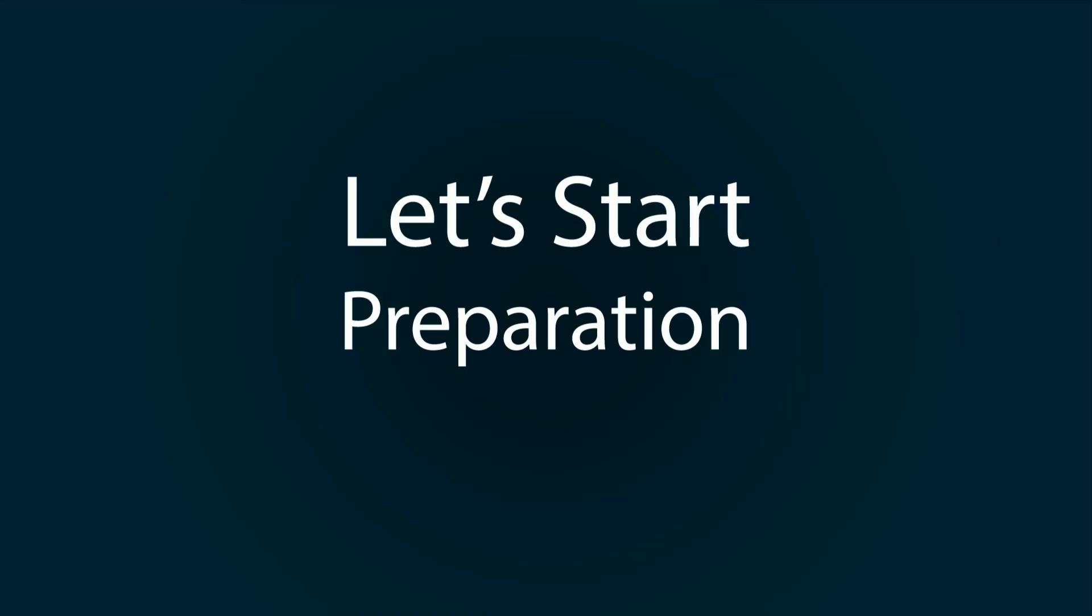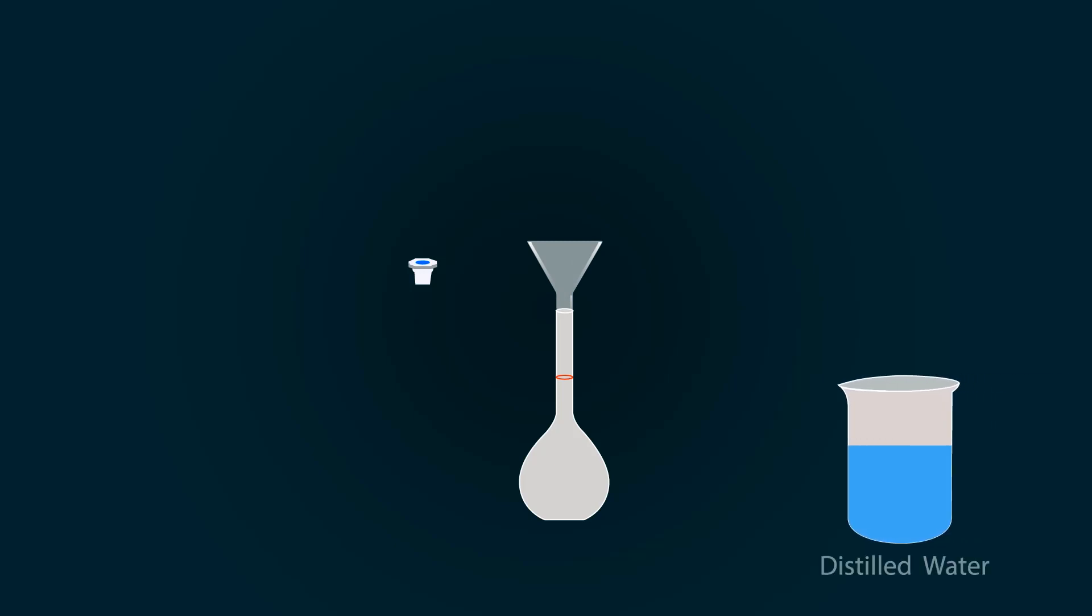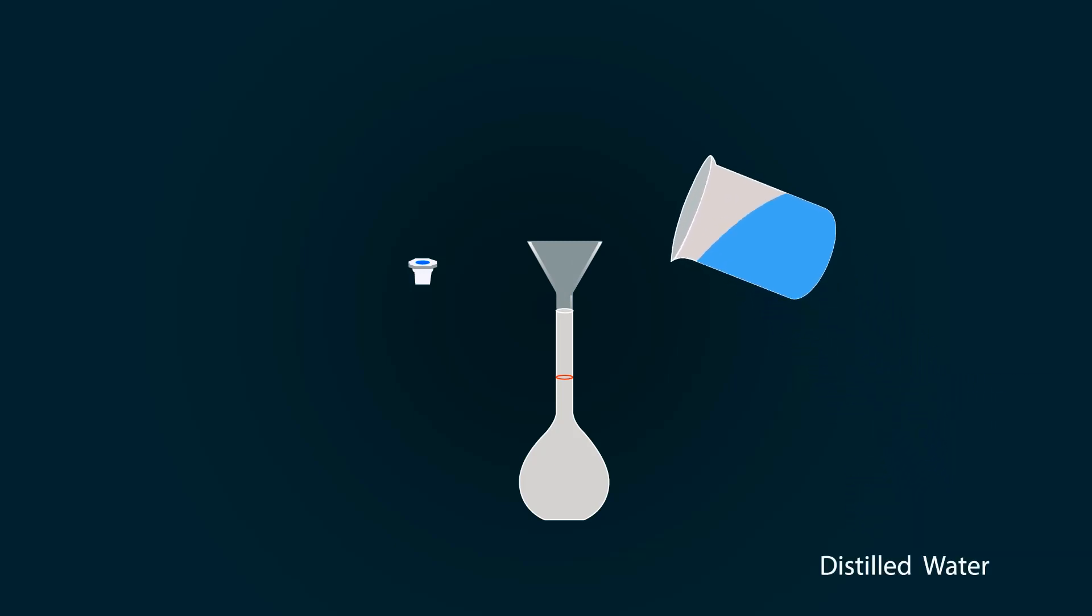First of all, take a 1000 milliliter volumetric flask and put a funnel on the opening. Please add some distilled water in the volumetric flask before adding acetic acid. Do not add acetic acid directly into the volumetric flask because it may burst.